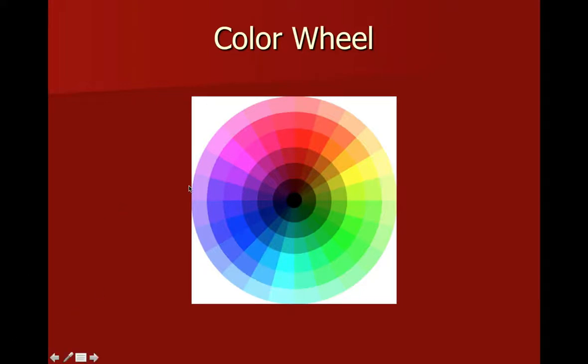Now the color wheel is basically a harmonious relationship of colors. As we discussed earlier, hues are these solid colors in this middle ring. So red, green, blue, orange, purple.